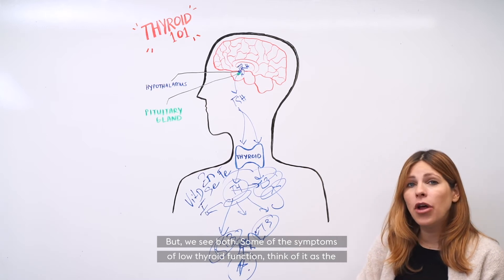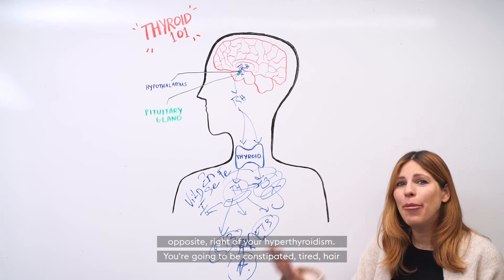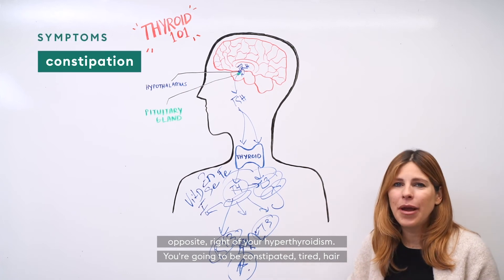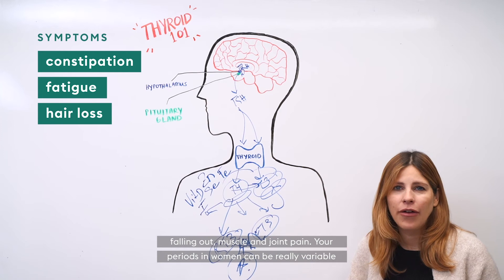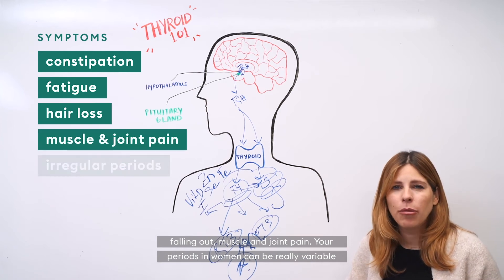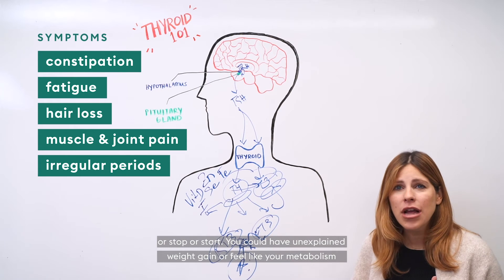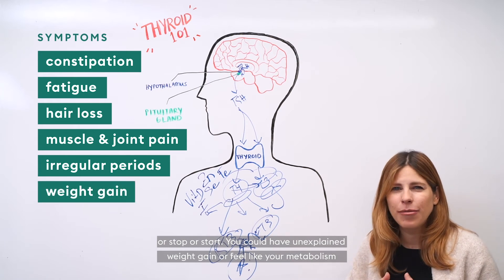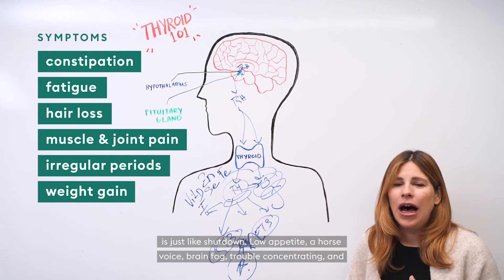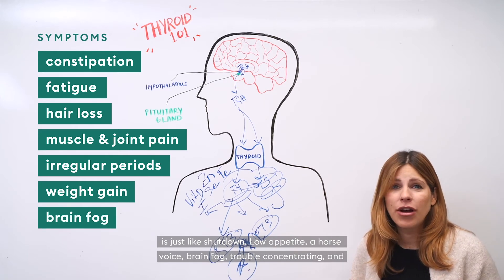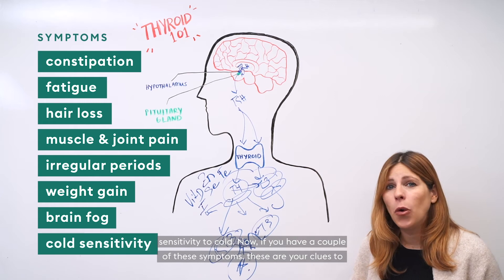Some of the symptoms of low thyroid function, think of it as the opposite of your hyperthyroidism. You're going to be constipated, tired, hair falling out, muscle and joint pain. Your periods in women can be really variable or stop or start. You can have unexplained weight gain or feel like your metabolism is just shut down. Low appetite, a hoarse voice, brain fog, trouble concentrating, and sensitivity to cold.